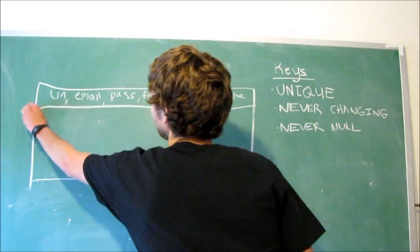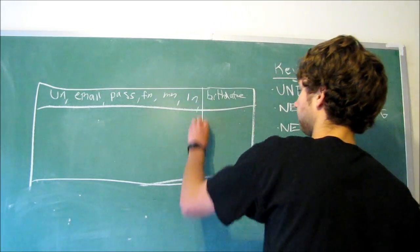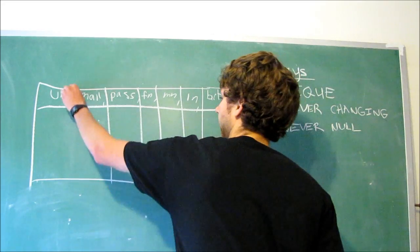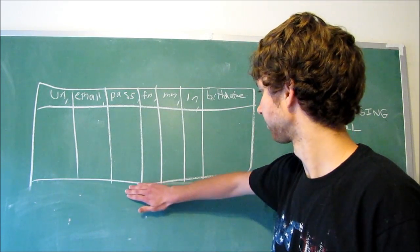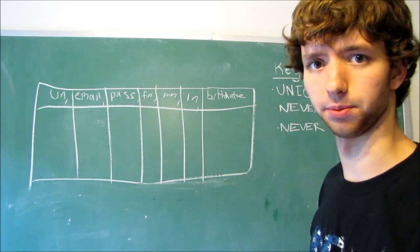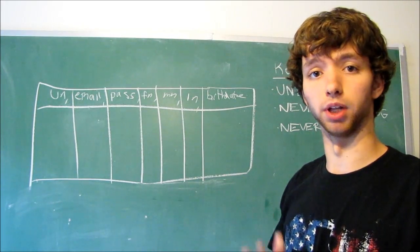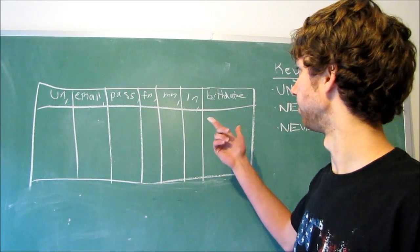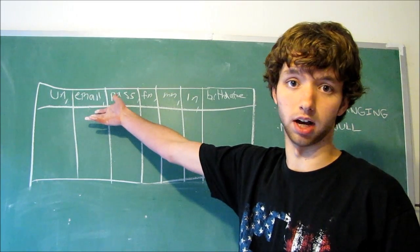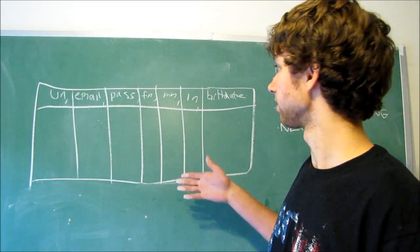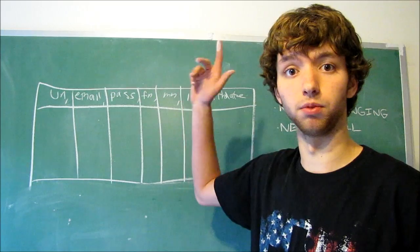So every single row within this table is going to need a value for each one of these columns. Some instances, for databases, you will allow people to put in blank values. For example, if someone doesn't have an email, we could make it optional. That way, some people have null or no value at all. Other people have values. But for this case, I'm going to say everything is required.